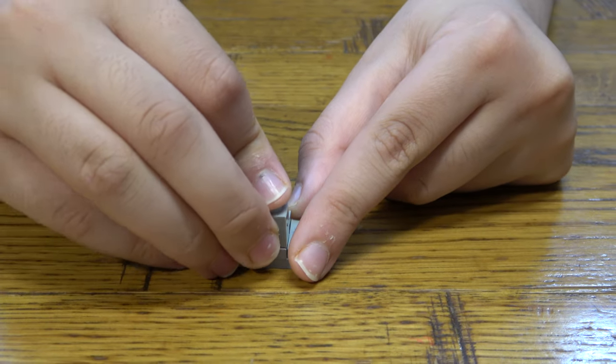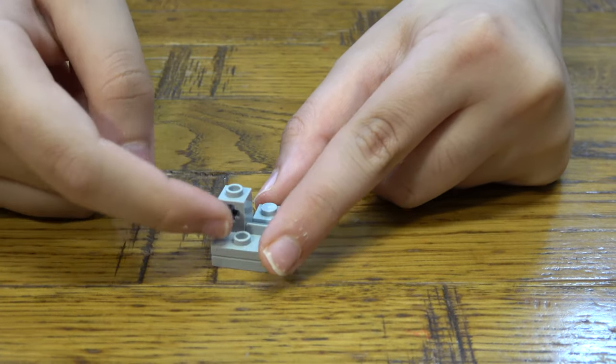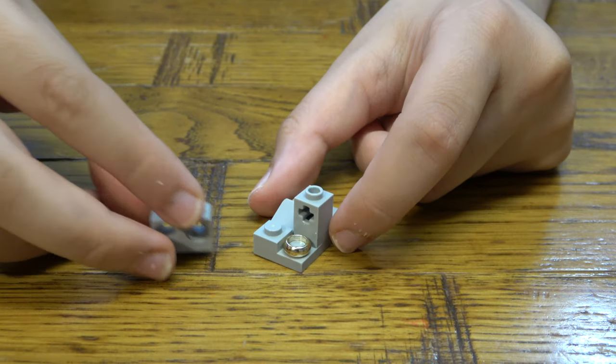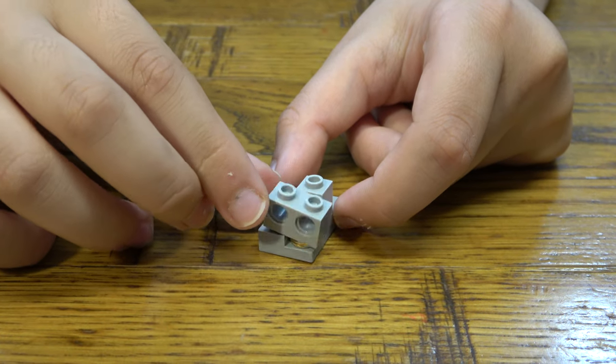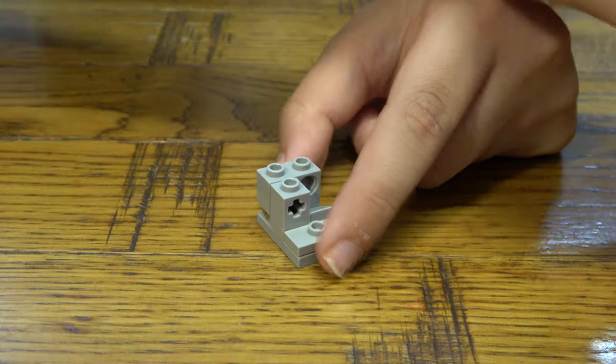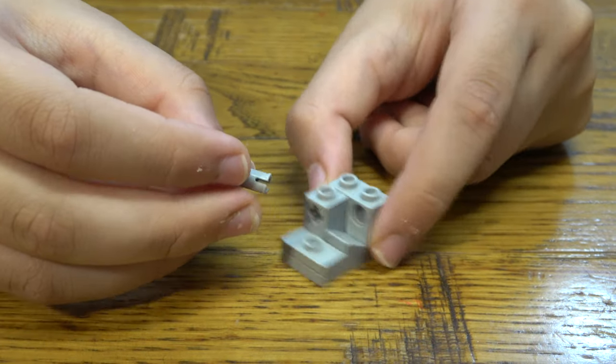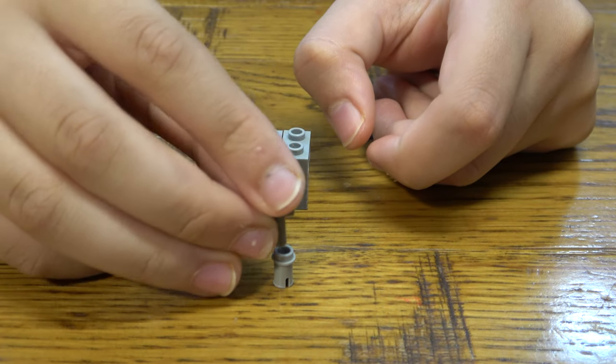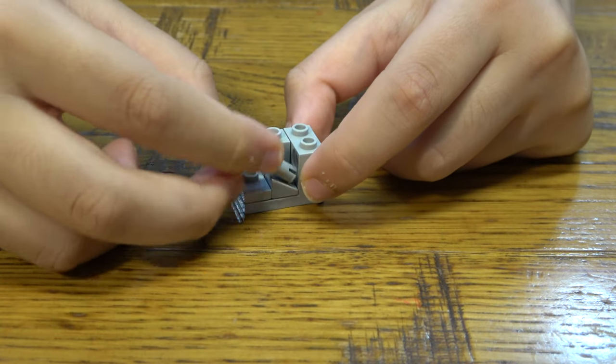And then next you're going to be placing one of these with the cross hole and the one with two circle holes, and just place it there like so. And then here you need to get this, place that through.